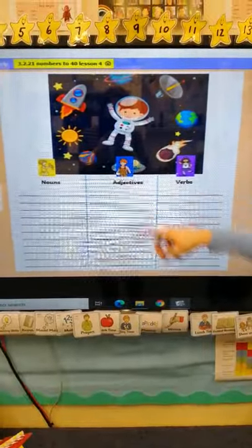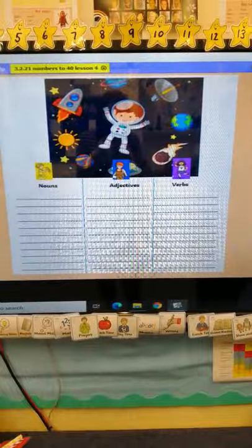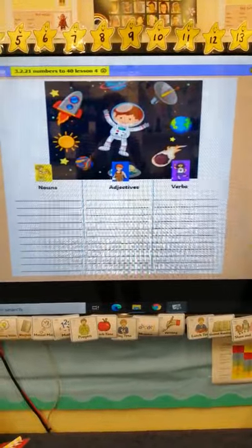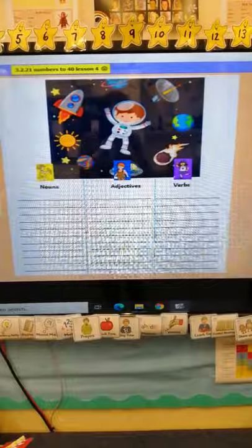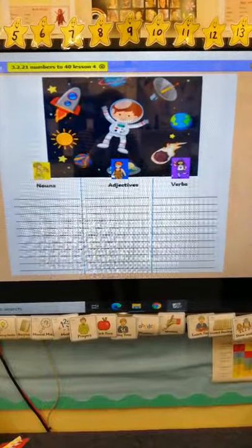So on Tapestry, you have a sheet that looks just like this and you have some words, and I would like you to sort the words out into nouns, adjectives, and verbs. Let's see if we can do a few together.